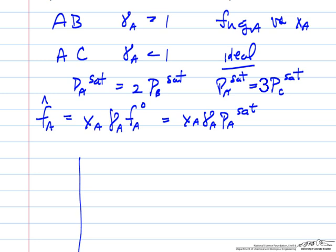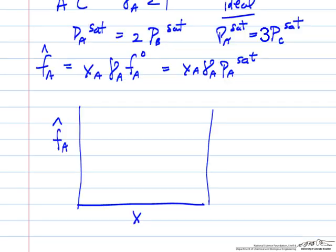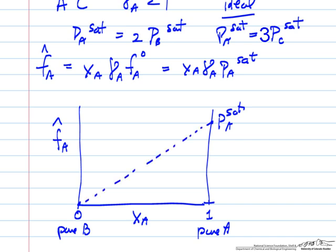What we want to plot is the fugacity of A in mixture versus the mole fraction of A. Here's 0, here's pure A, here would be pure B. When we have no A then the fugacity must be 0. When we have pure A the fugacity must be the saturation pressure of A. If this were ideal we would have a straight line. So this line is ideal.